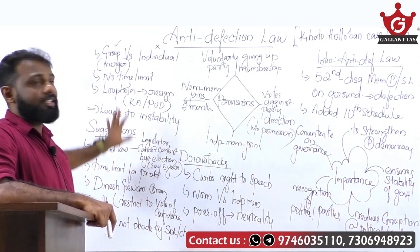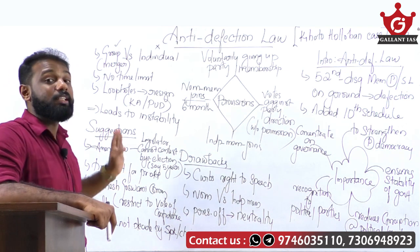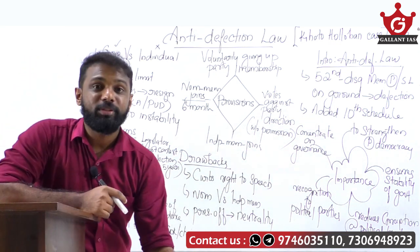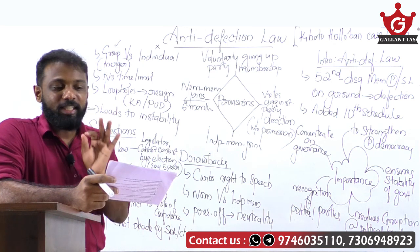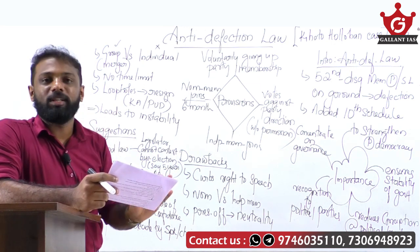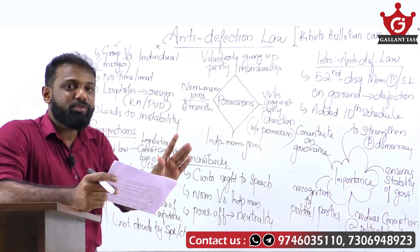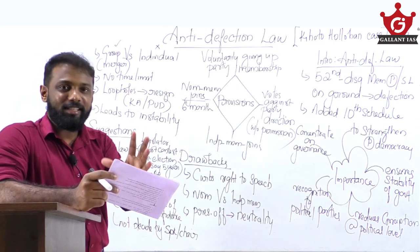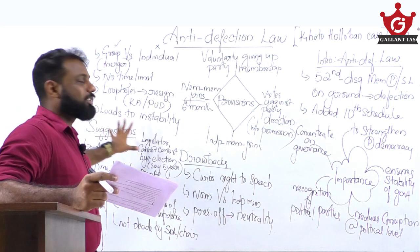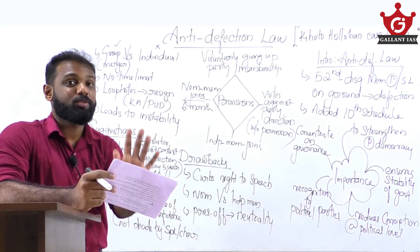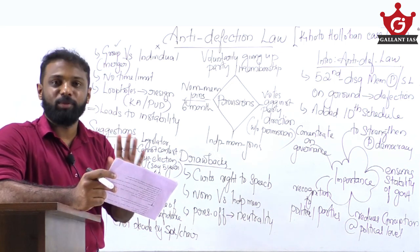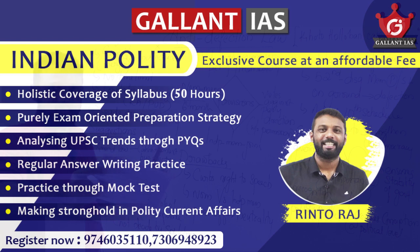All these things lead to the instability of the government or the executive. This point is very important because the question says that the 10th Schedule, which aimed at ensuring the stability of the executive, is fruitless. We must justify and connect our points to the demand of the question, saying that because of these issues, it leads to the instability of the government — thus addressing the first part of the question.